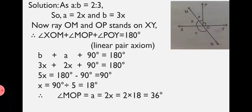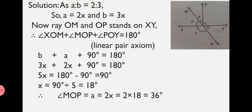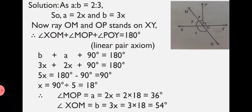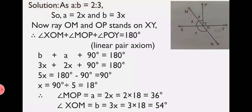Therefore, Angle MOP equals A equals 2X equals 2 times 18 equals 36 degrees. Similarly, B is given as Angle XOM. So Angle XOM equals B equals 3X equals 3 times 18, that is 54 degrees.